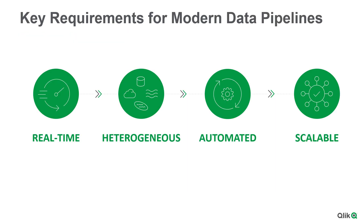To do this right, you need a modern approach to building out these pipelines. We see four key characteristics that are important. First, it needs to happen in real time — you need to unlock and move that data with low latency without impacting core transactional systems. Second, heterogeneity is really important — having a single tool that spans all different sources and targets. Third, automation is essential to address skills scarcity, using techniques like AI, machine learning, and data warehouse automation to automate mundane pipeline tasks, generate code, and push it down for execution into Synapse and other targets.